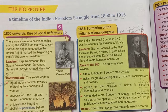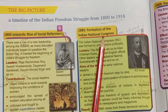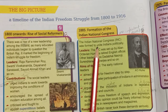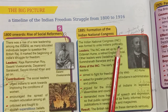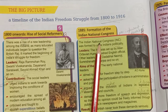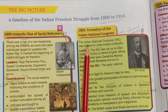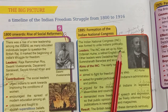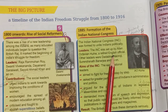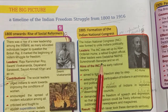The next movement was in 1885: the formation of the Indian National Congress. The Indian National Congress was formed to unite Indians politically. The INC was set up by Allan Octavian Hume, a retired English official. Other leaders included Dada Bhai Naoroji, Dinendra Nath Benert, and so on.